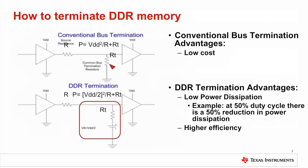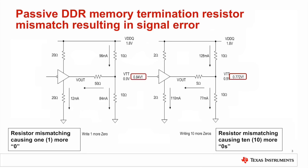Another reason why active DDR termination is important is for data integrity. The length of the DDR memory interconnects coupled with the multiple stubs required for supporting dual inline memory modules results in signal reflection that can cause data corruption. This problem has required more attention as speeds have increased. Reflection can be a result of mismatched impedance between driver impedance, received impedance, and interconnections.